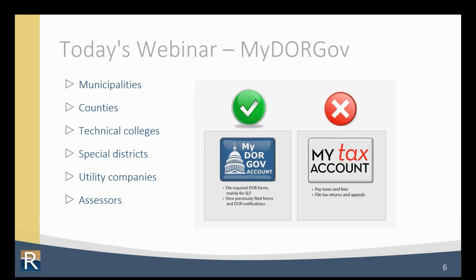We want to clarify that DOR also has My Tax Account or MTA. That's the system where you file sales and use tax or withholding tax forms and pay certain taxes or fees, like the $150 Tax Increment District or TID administrative fee if you have a TID in your municipality. MTA is a separate system and we will not discuss it in this webinar. If you need a refresher in My Tax Account, visit our website's training page to register for a My Tax Account webinar or view one that was recorded. Today, we're focusing on MyDORGov.